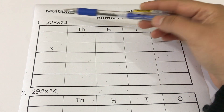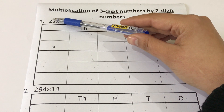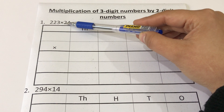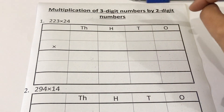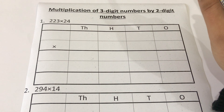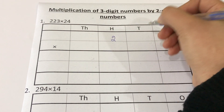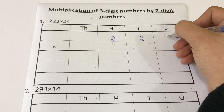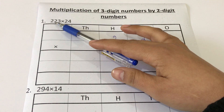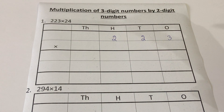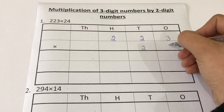Students, let's start. You can see my question is in the horizontal form and my first question is 223 × 24. As we were doing in the previous lessons, I will write my numbers in their proper places first in the place value chart. In 223 we have two hundreds, two tens, and three ones. We will write 223 on top, then we will write 24 below it. In 24 we have two tens and four ones.